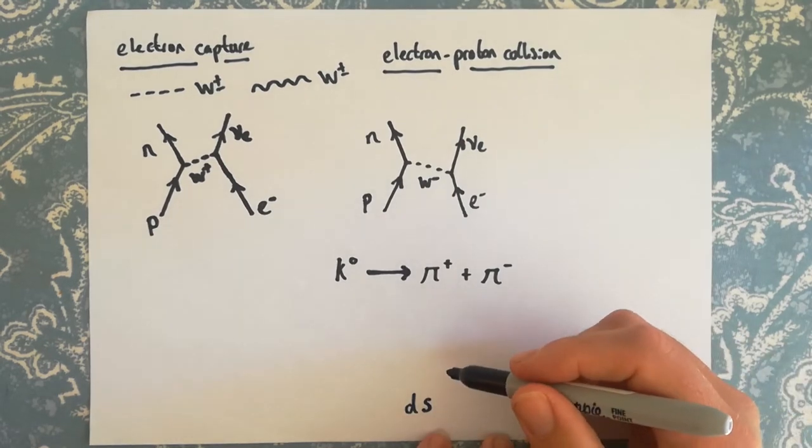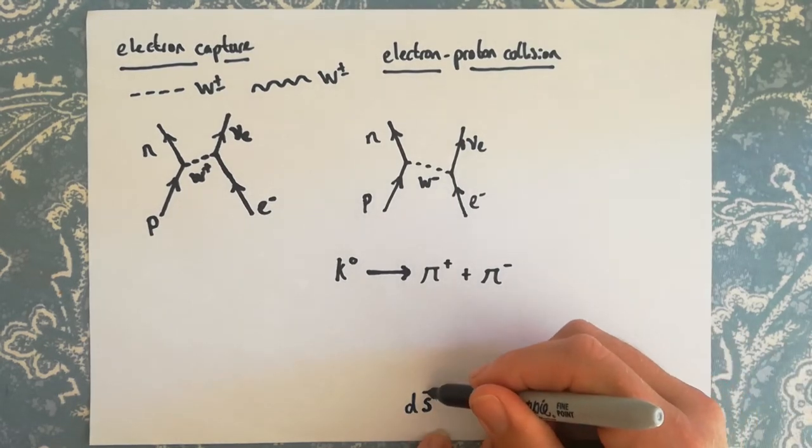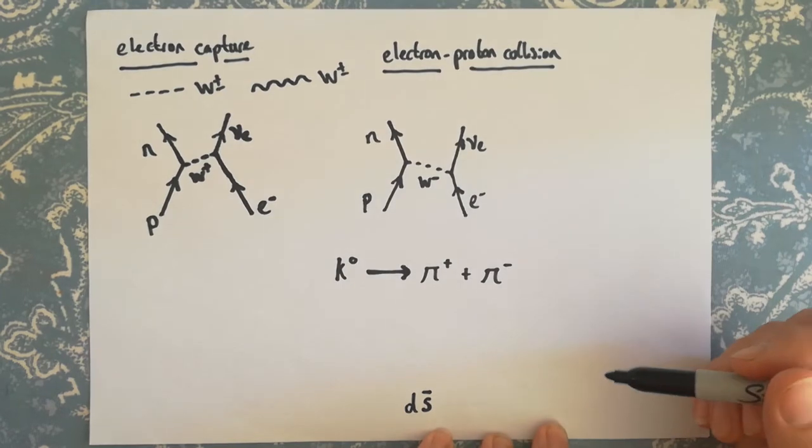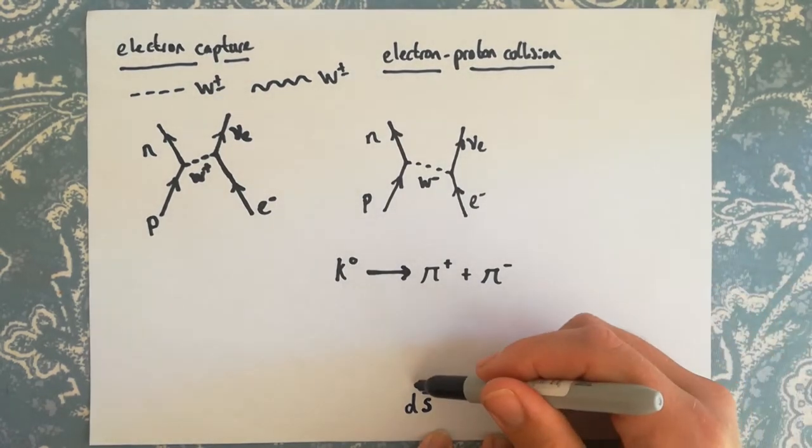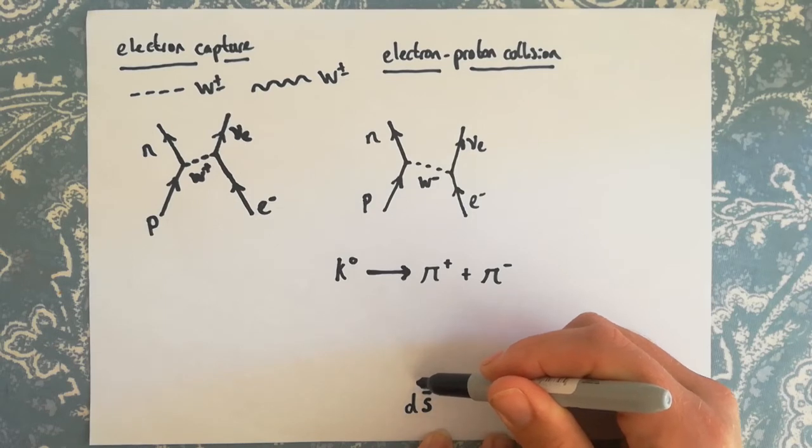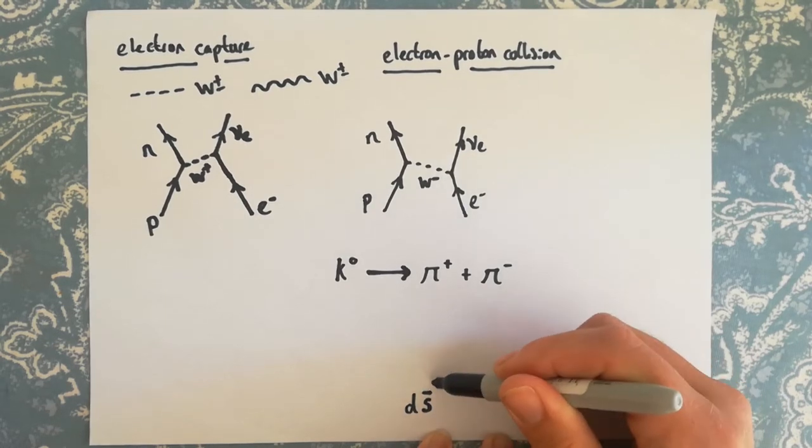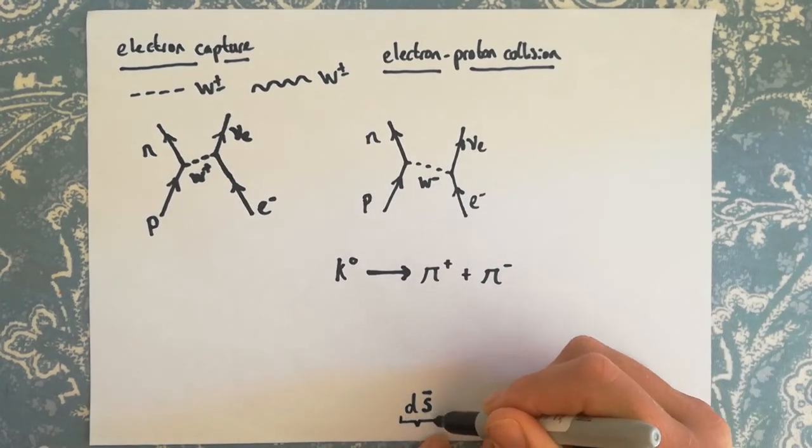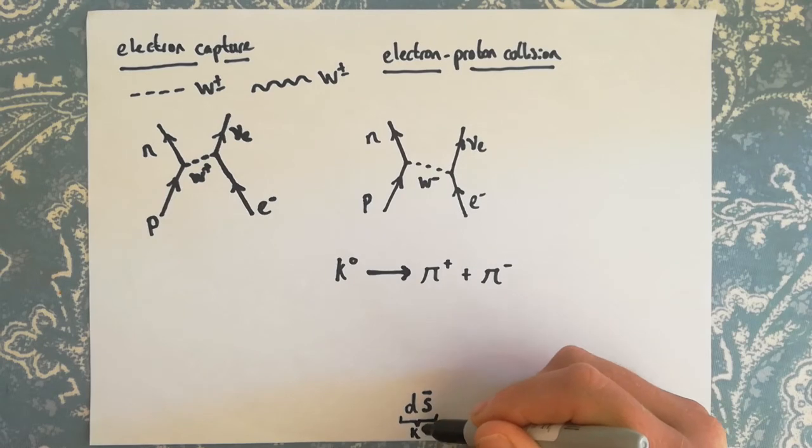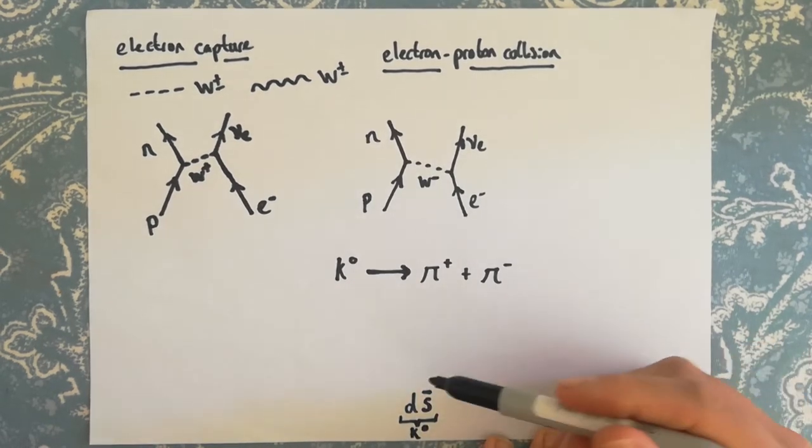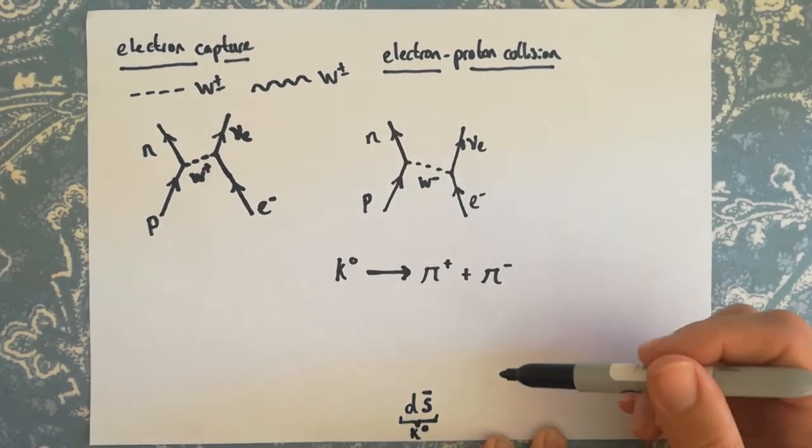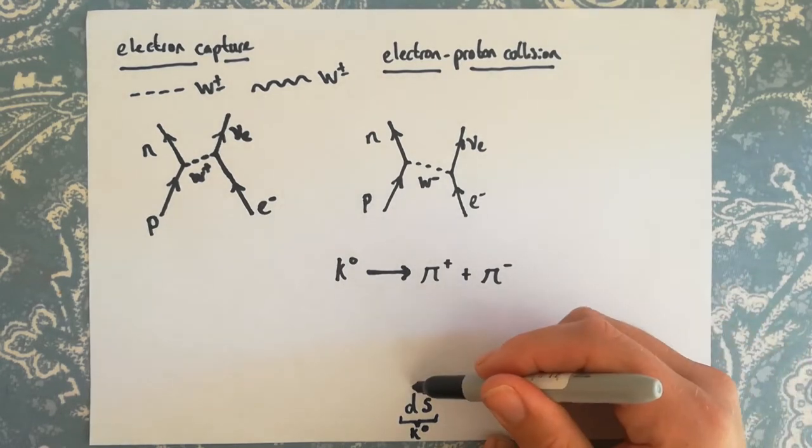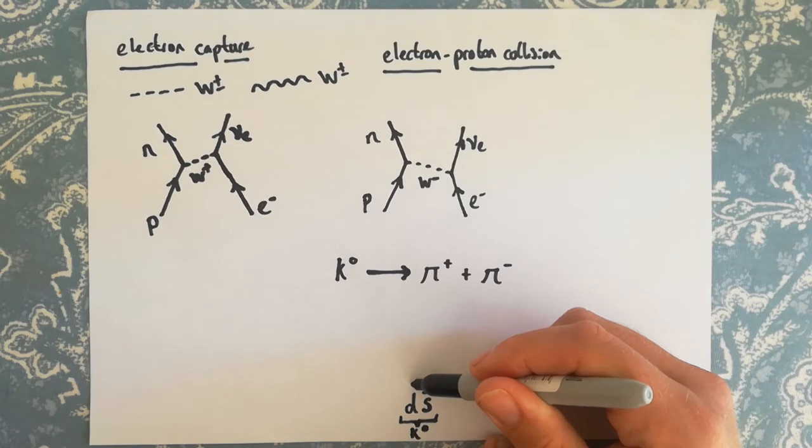If we wanted to do the Feynman diagram for K plus or K minus, we'd have to start involving strong interactions as well as weak interactions, but we're not going to get into that. So the K zero is down here. So this is a down and an anti-strange quark, so strangeness value of plus one because it's got an anti-strange quark.